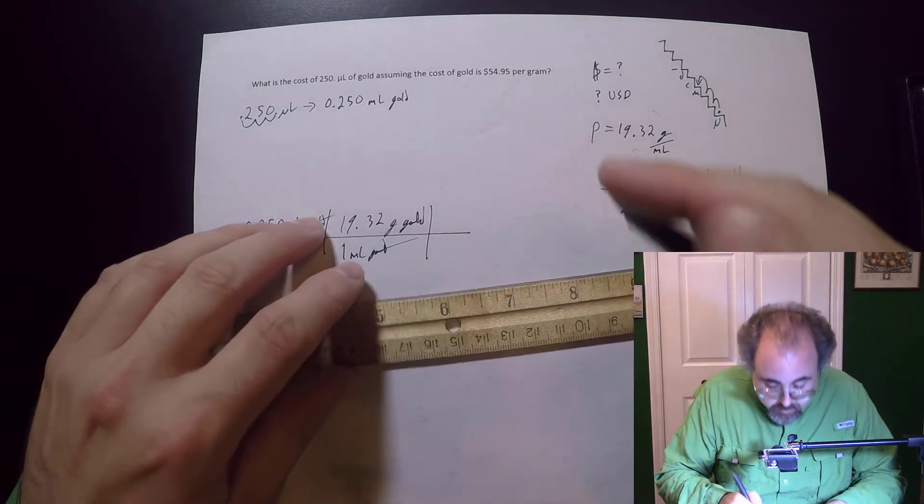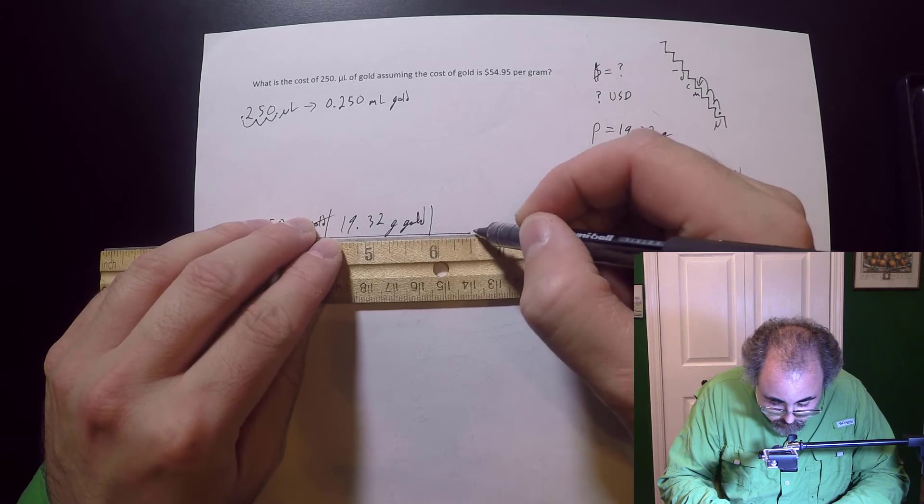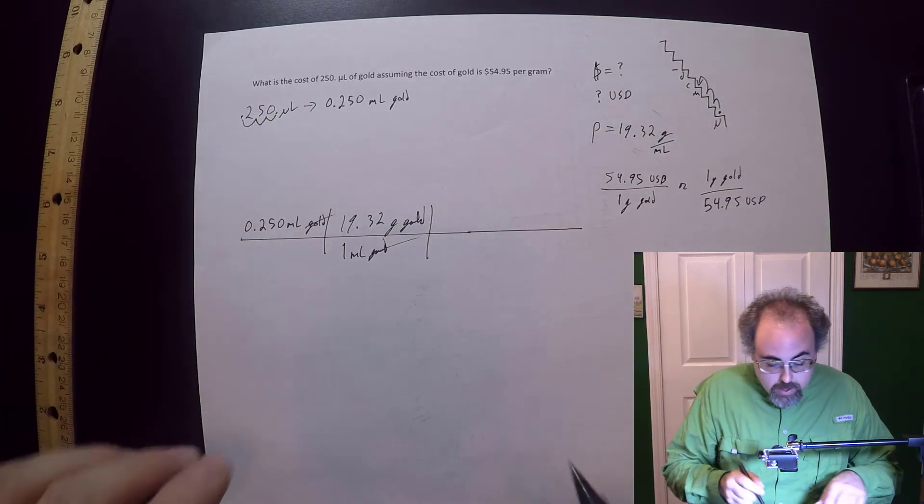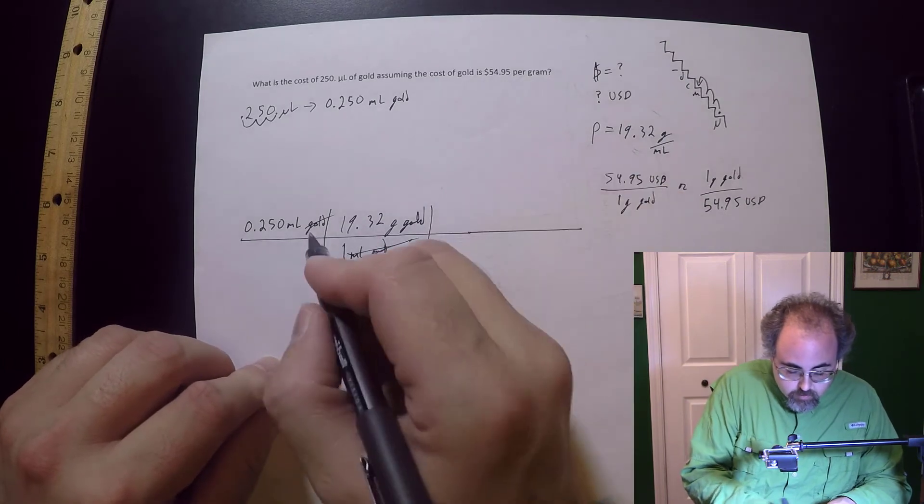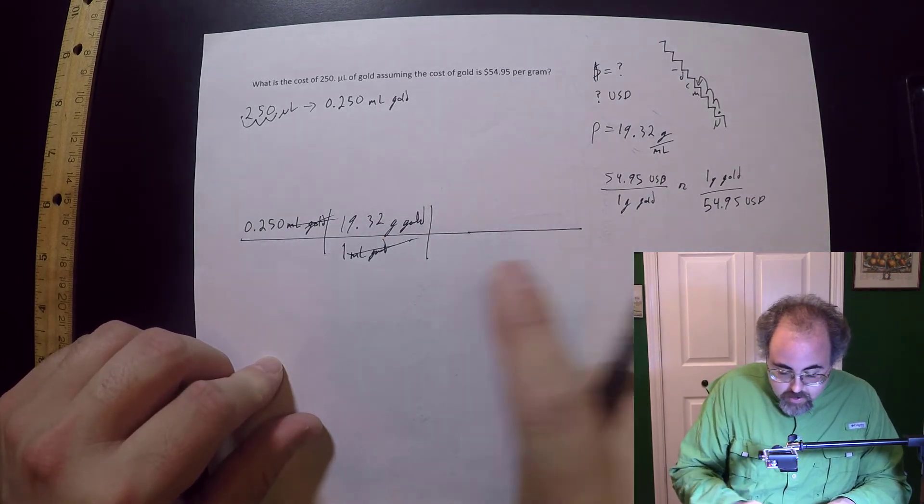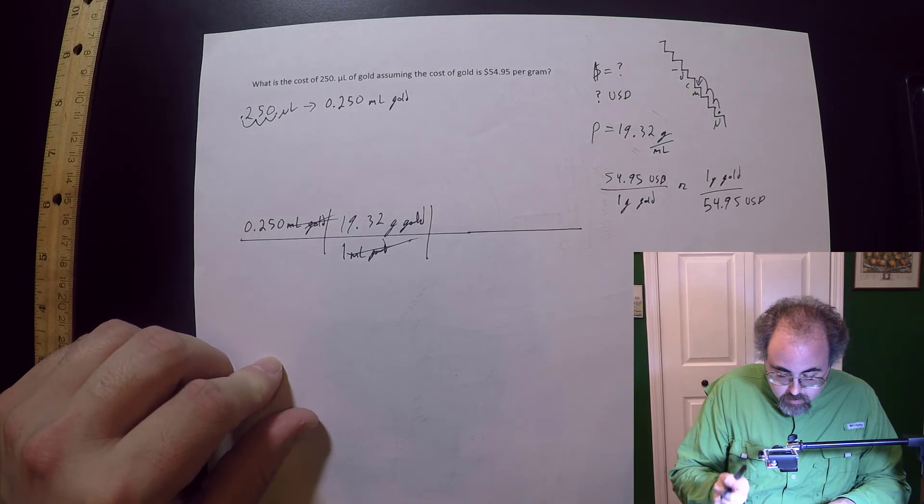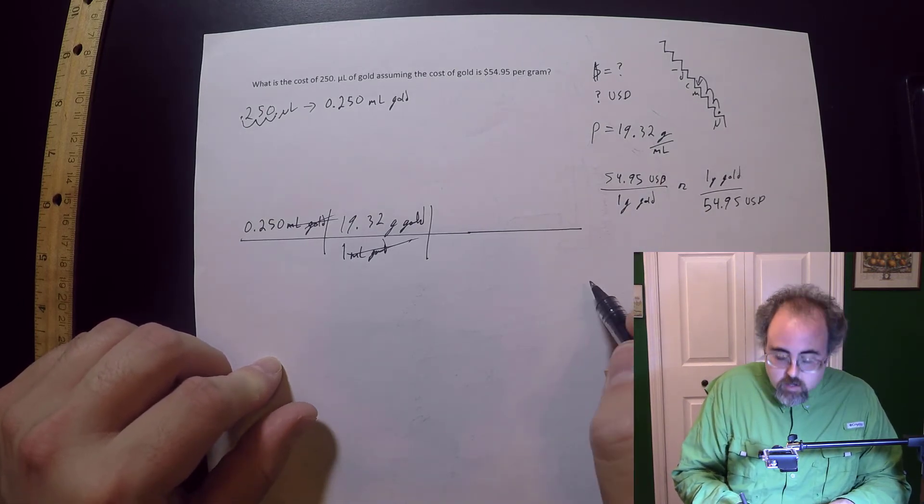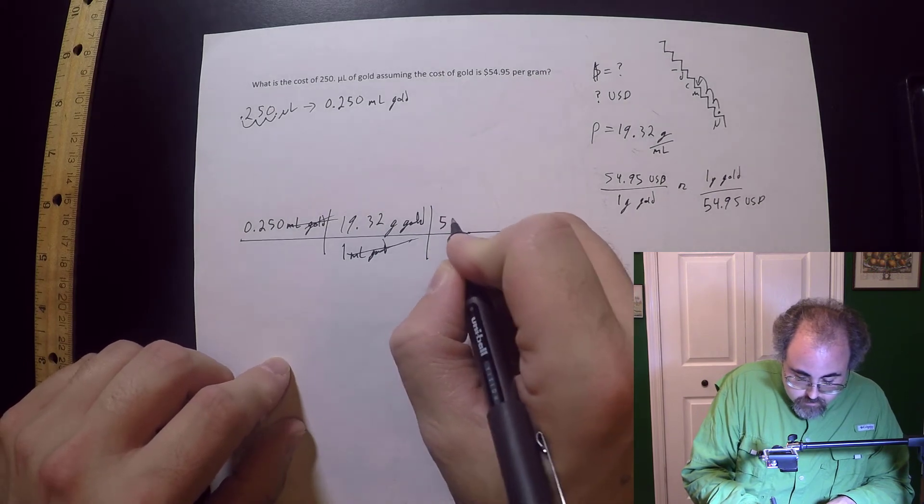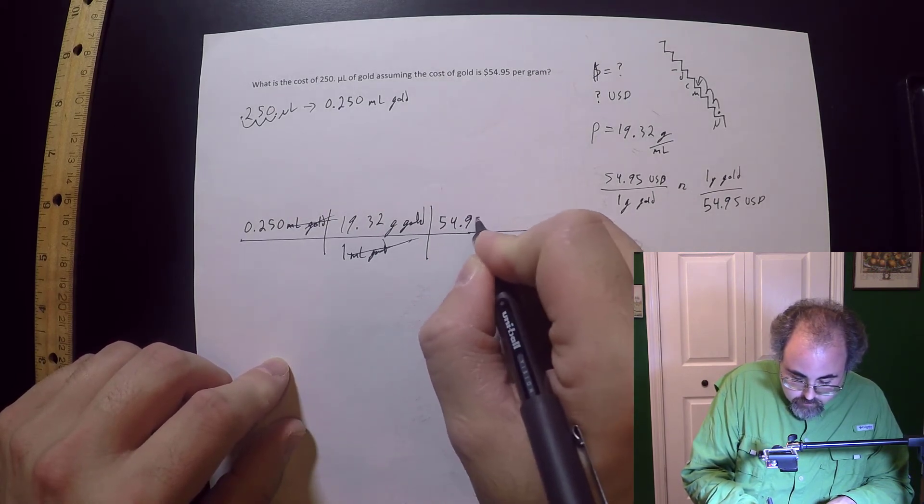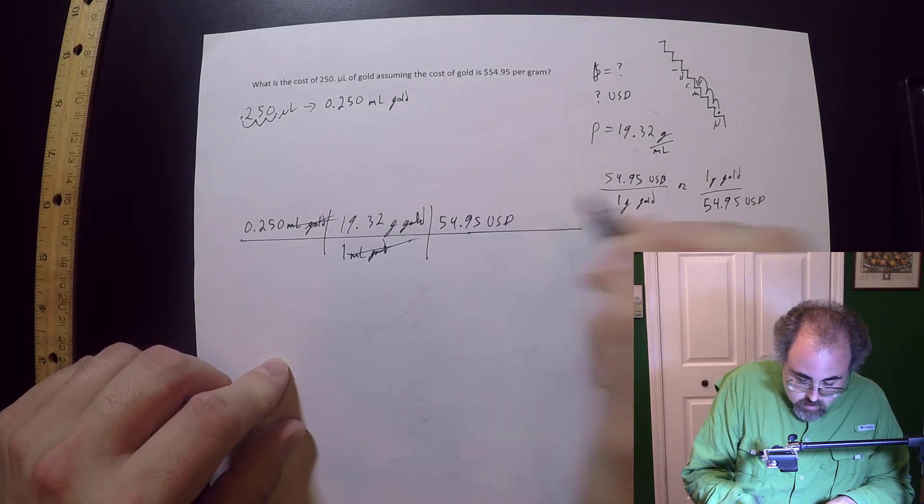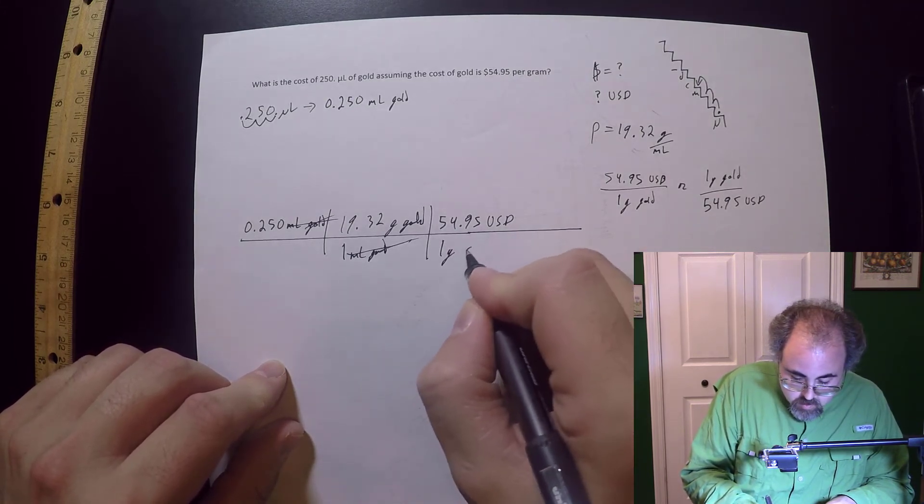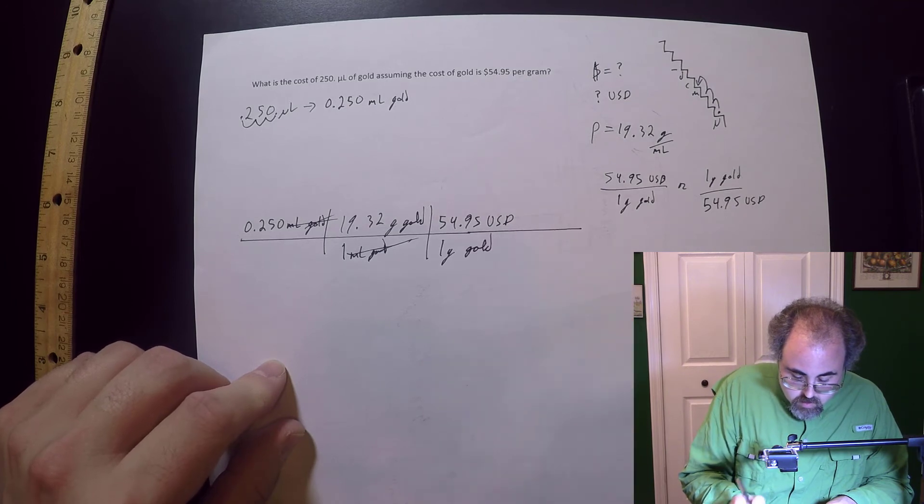And I'm going to use this guy. So that's going to be my 19.32 grams gold. And this time I did not make my line long enough. So I'm going to make this a little bit longer. Okay. So those cancels with those. Now I've got what I want by what I got. What I want is money.